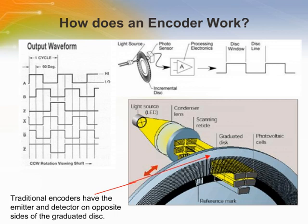An optical encoder is an optoelectronic device which translates rotational or linear movement into some useful electronic waveform. These encoders generally consist of two parts: a moving unit and a stationary unit. The moving unit is attached to and moves with the device being monitored and contains information to be sensed by the stationary unit.